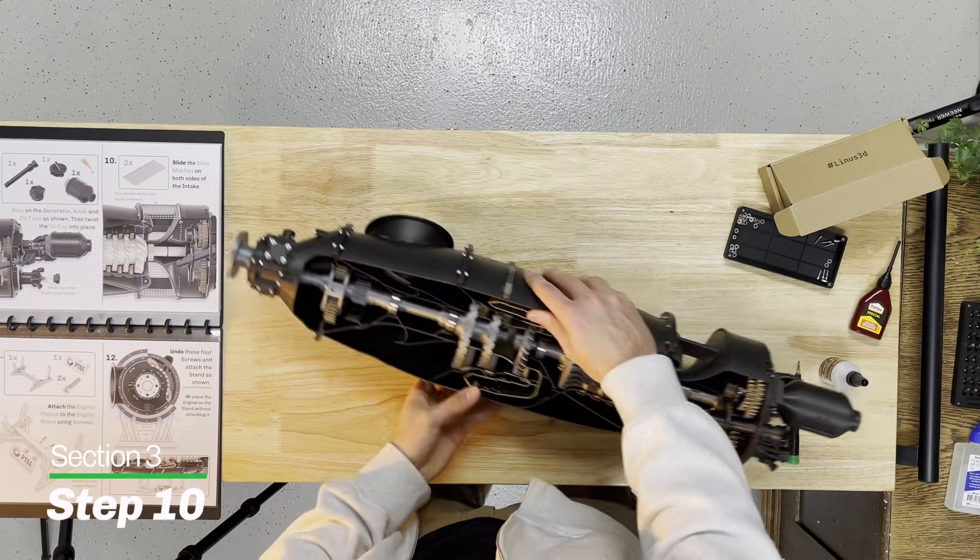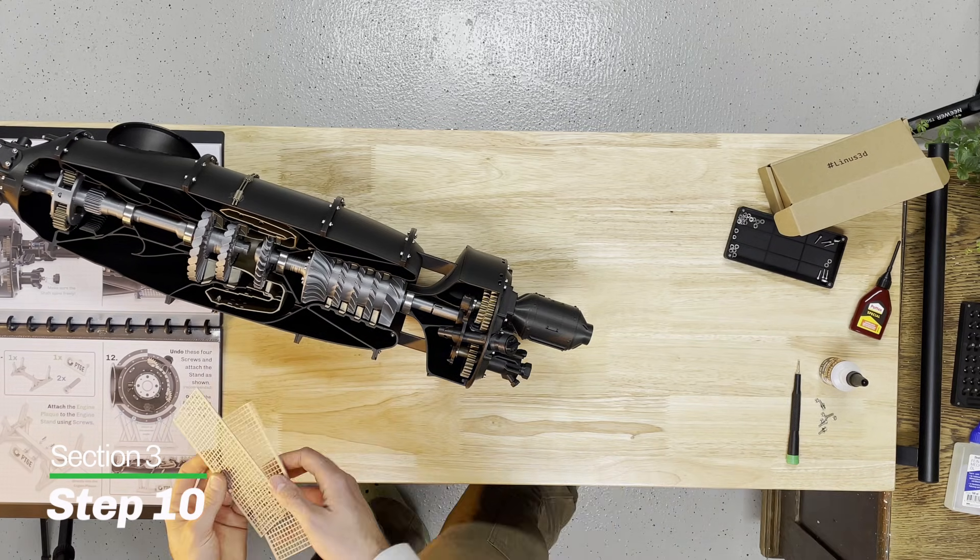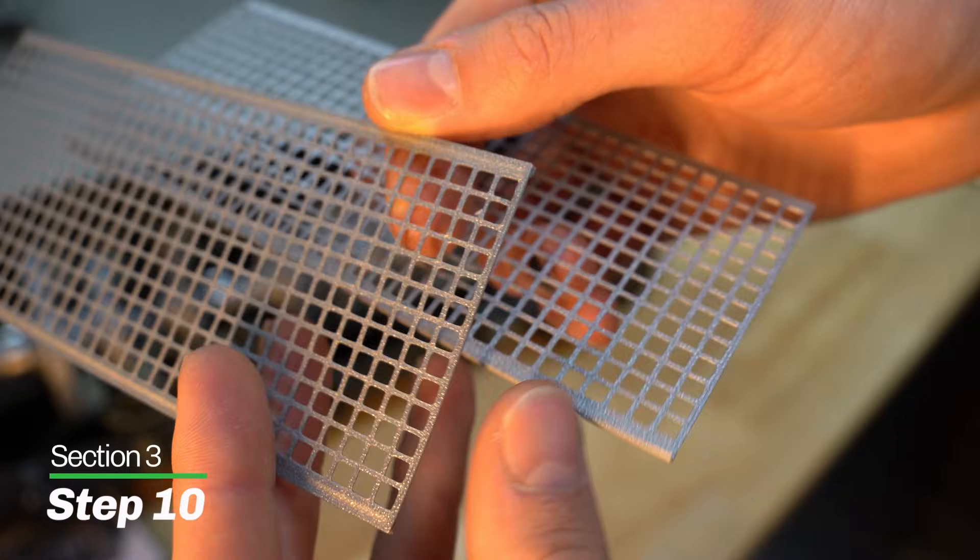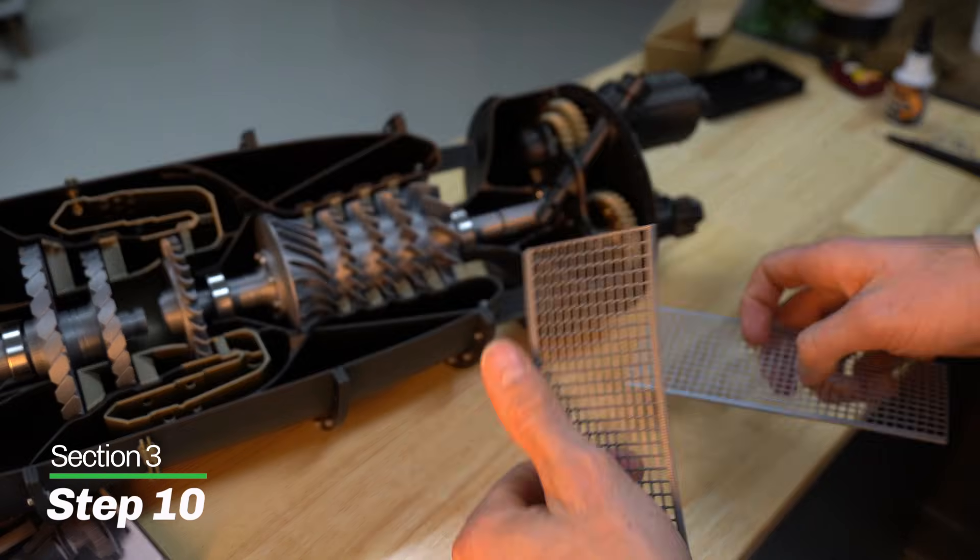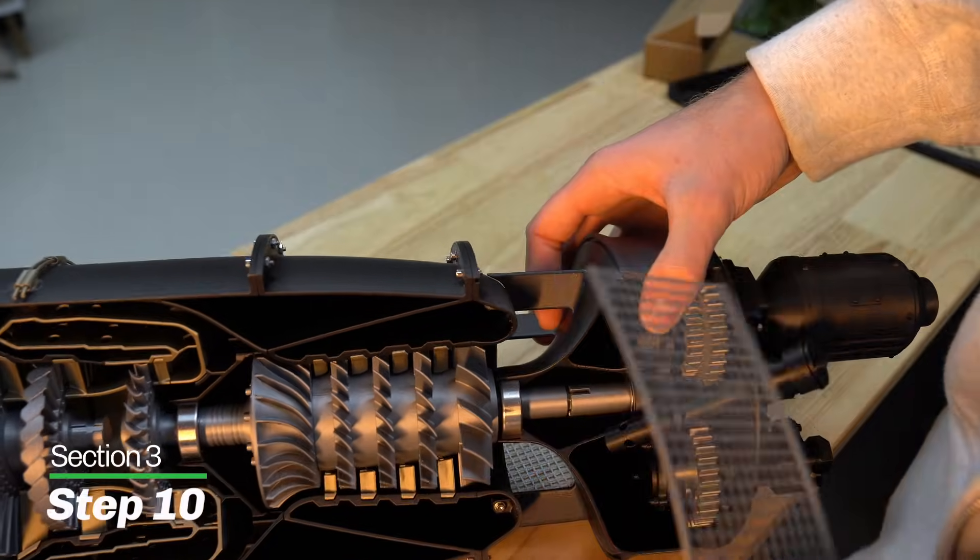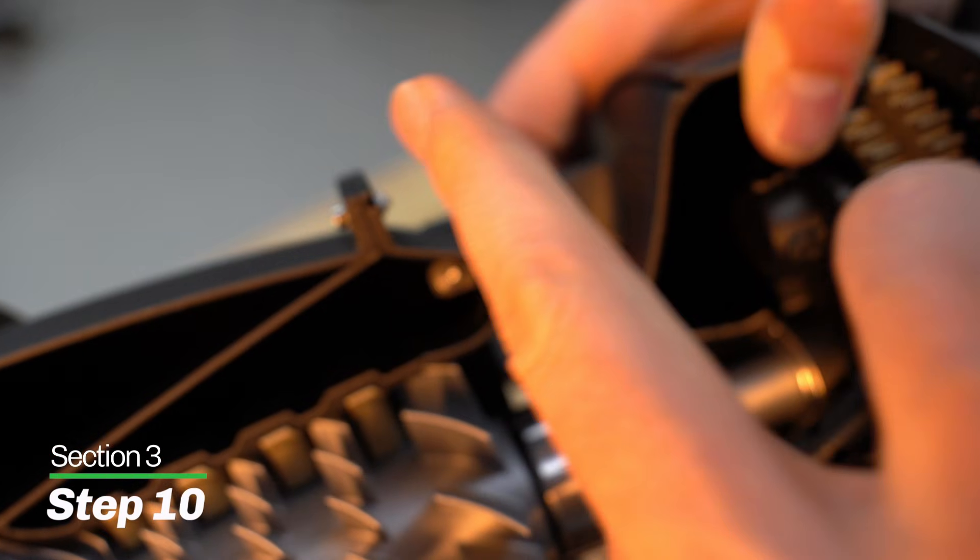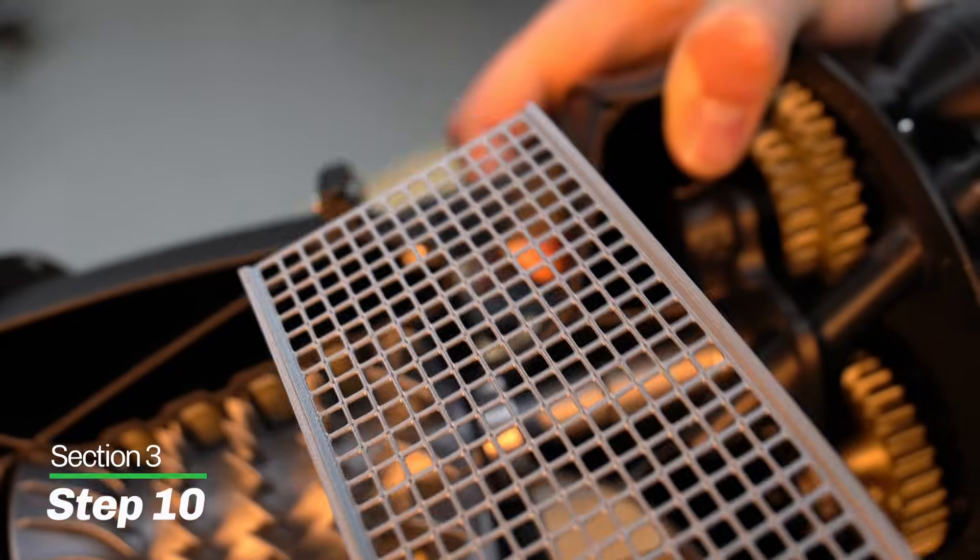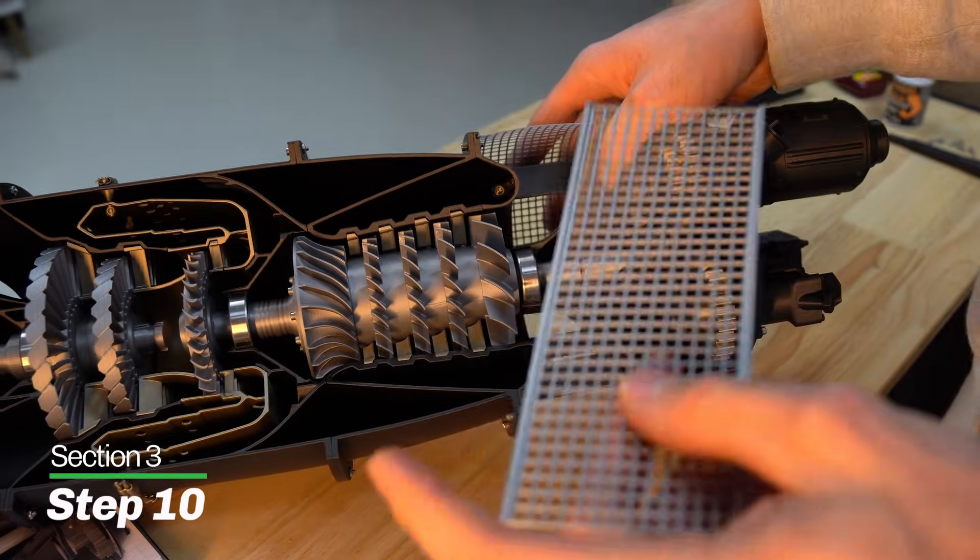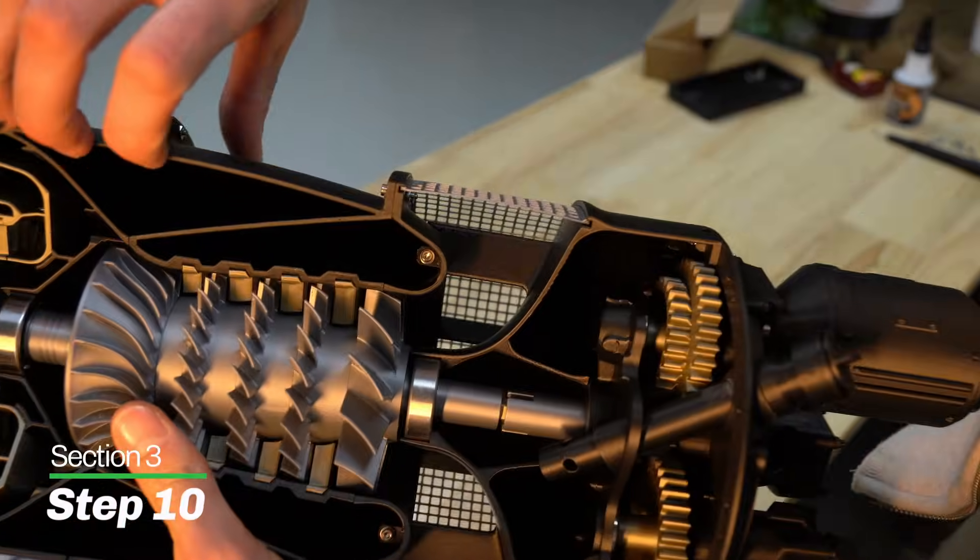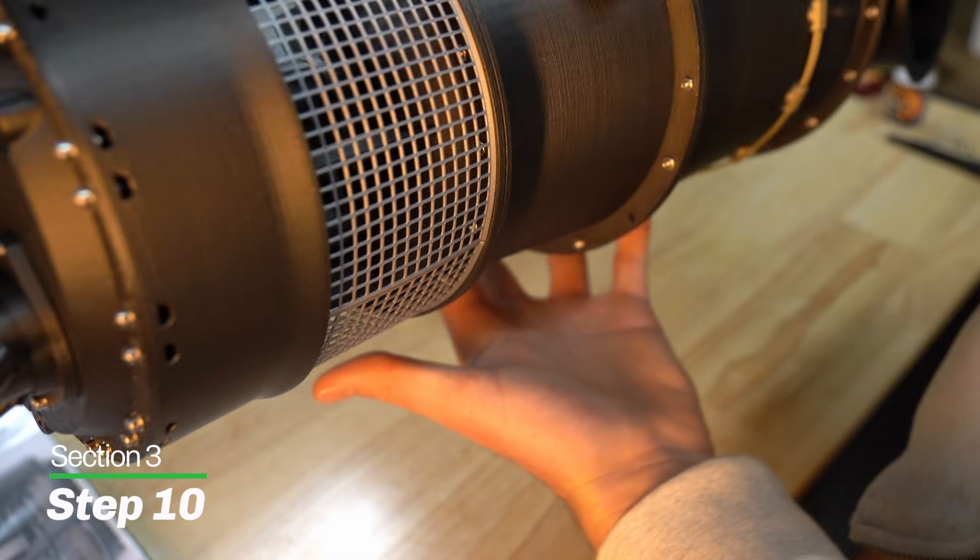Step number 10, super simple and easy. We're going to grab our inlet meshes. You can decide if you want the print bed surface or the top of the print surface sticking outward. We're going to focus on the inlet section here. As you can see on the inlet, there's two guides left and right. We're simply going to take the mesh and push it along these guides. Do that on both sides. No need to glue them in place.